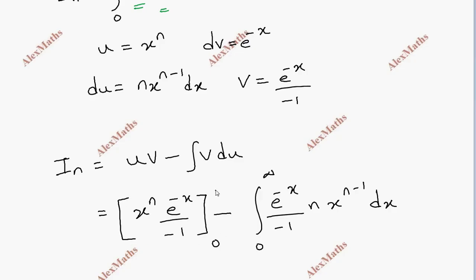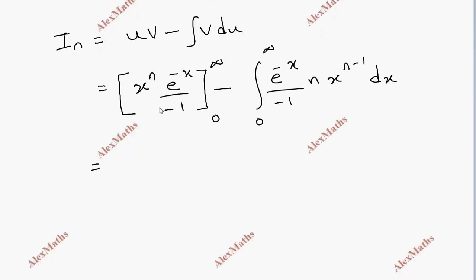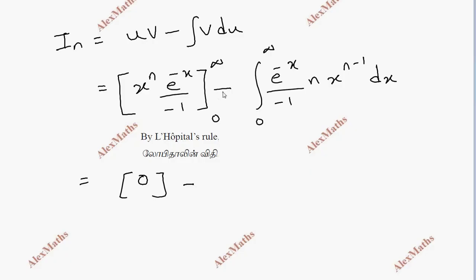The limit is 0 to infinity, so we complete the integration. Substituting the limits — at infinity the first part gives an indeterminate form that evaluates to 0, and at 0 it also gives 0. So the boundary term vanishes, leaving the integral of x to the power n minus 1 dx.